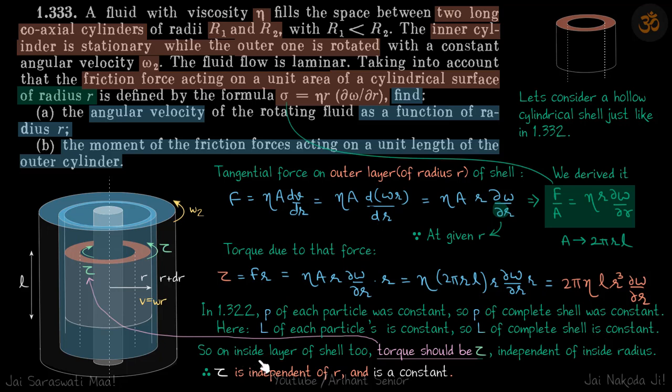Therefore, on inside layer of shell, torque should be tau. So net torque on this shell is constant. And we have seen on the outer lateral surface, torque is tau. So on the inside lateral surface, torque should be equal in magnitude and opposite in direction. That's how total torque on the shell is going to be zero and angular momentum is going to be conserved. So that is independent of inside radius. So inside radius was random, but it doesn't matter. You can go at any distance still at the inside radius, the torque is going to be same.